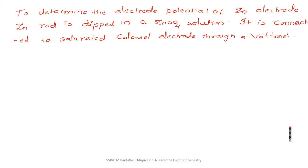This is the construction of a cell. We may represent this cell like this: Zn | ZnSO₄ || Cl⁻ | Hg₂Cl₂ | Hg. Here it is a saturated solution.